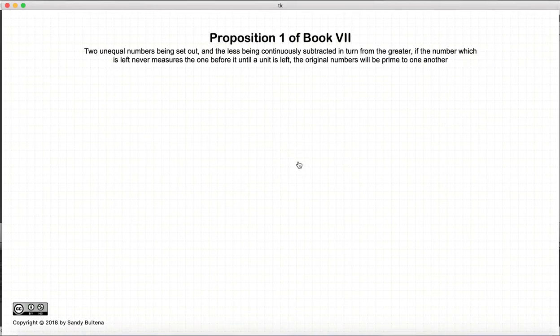This tutorial is on Proposition 1 of Book 7. Now in this tutorial, we are going to demonstrate the method to discover whether or not two numbers are prime to one another. Before we begin, what does it mean for two numbers to be prime to one another? It's that their largest common divisor is 1. That's the definition of two things being prime to one another.